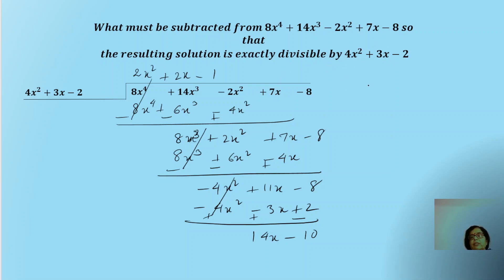To understand this concept: if I divide 9 by 2, I get quotient 4 with remainder 1. If this remainder 1 is removed from the original number 9, we get 8, which is an exact multiple of 2. The same concept applies here — when the remainder expression is removed from the original polynomial, the resulting polynomial will be exactly divisible by the divisor 4x² + 3x − 2.